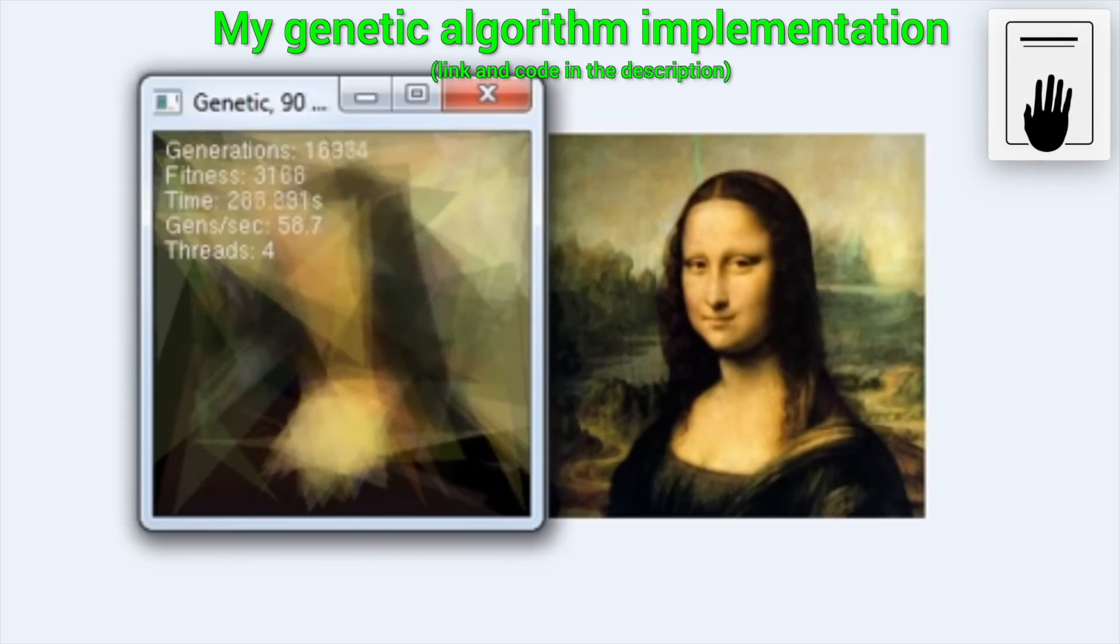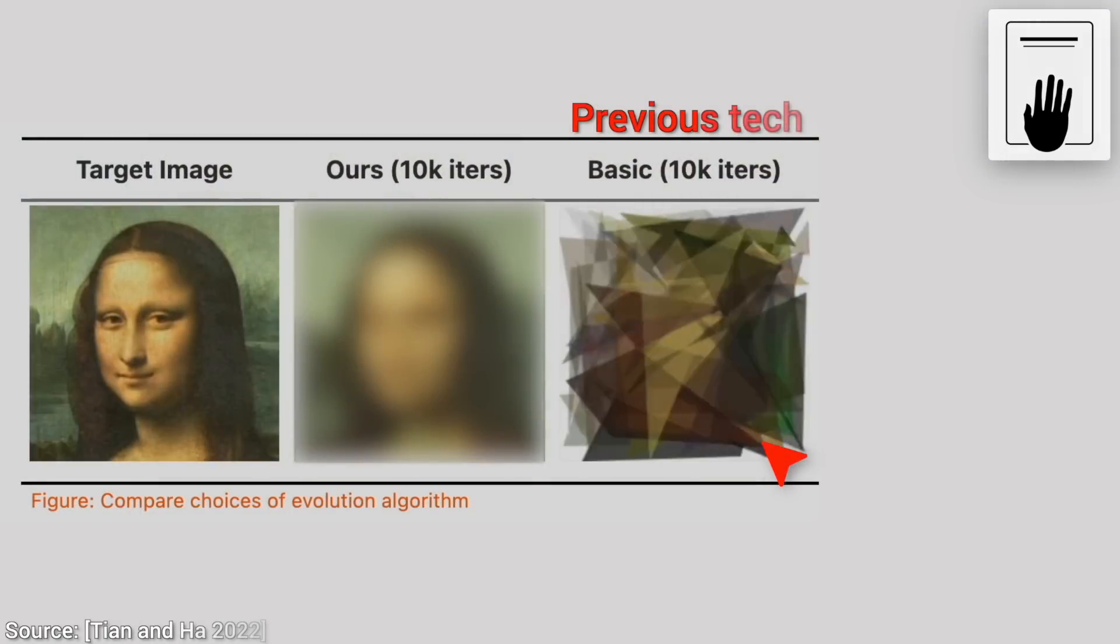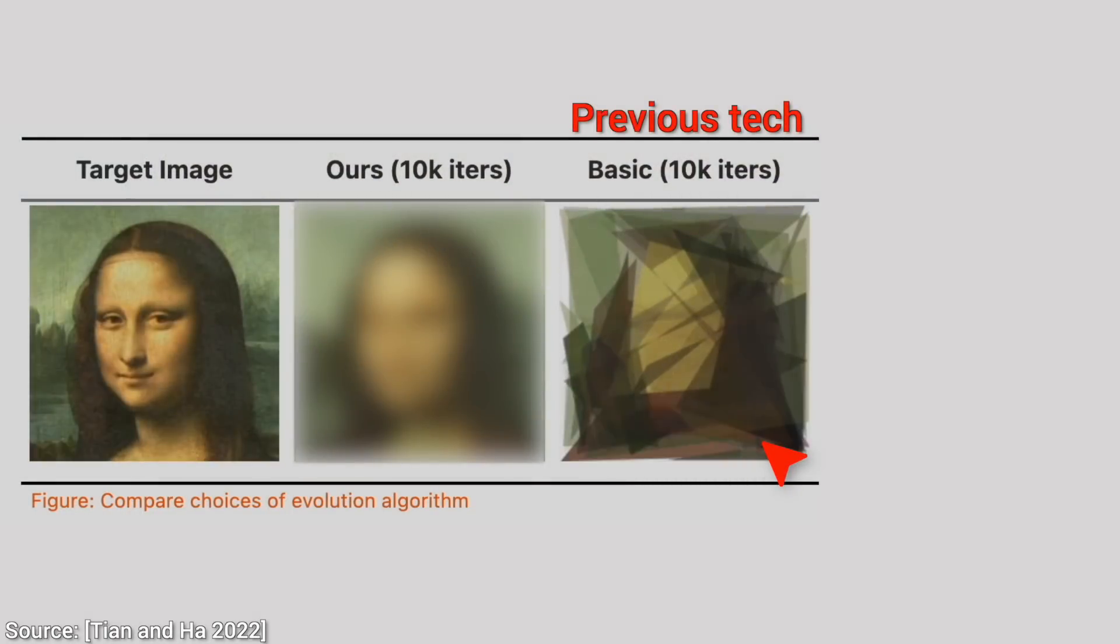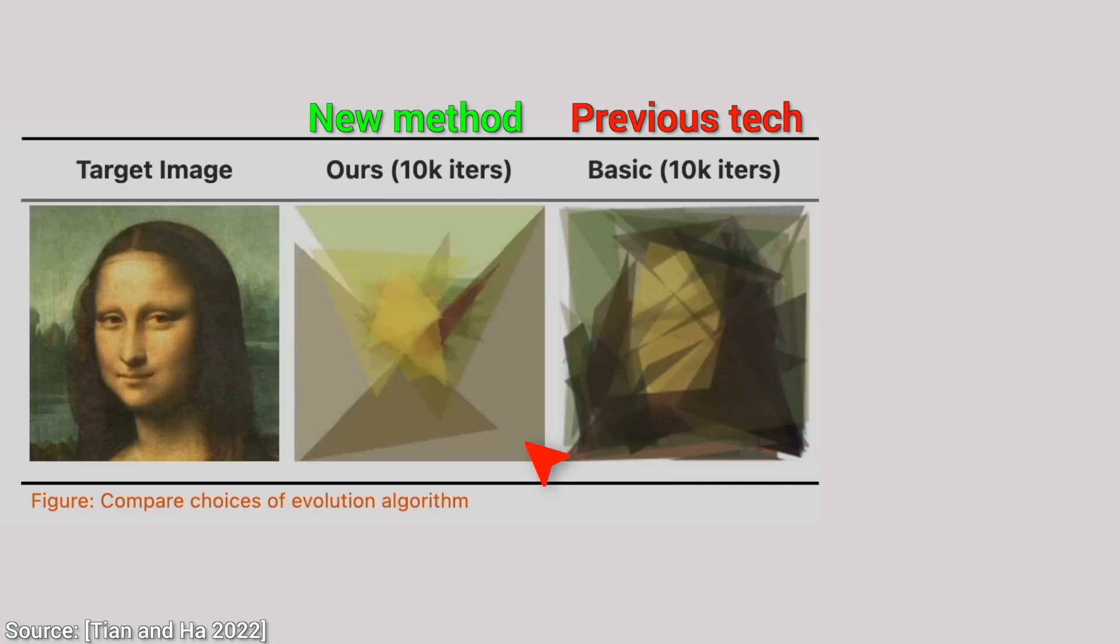So now, hold on to your papers, and let's see together! Here is a basic evolutionary algorithm after 10,000 steps. Well, it is getting there, but it is not that great. And let's see how well their new method does with the same amount of steps.